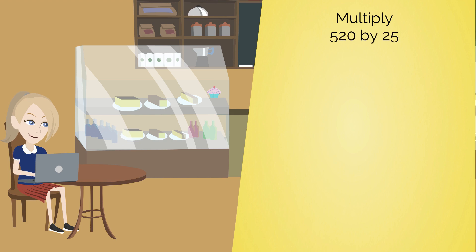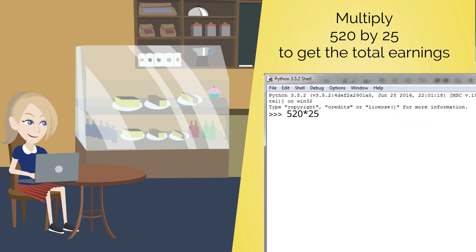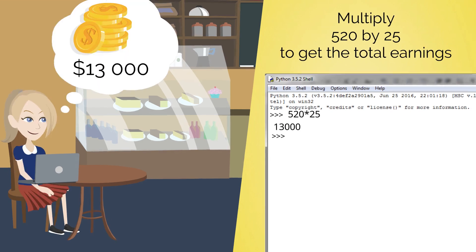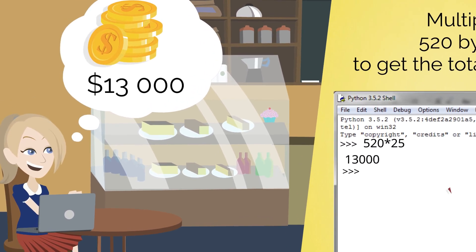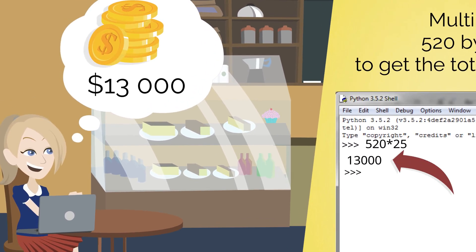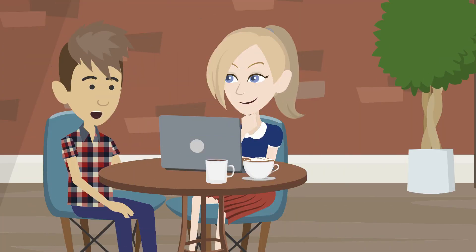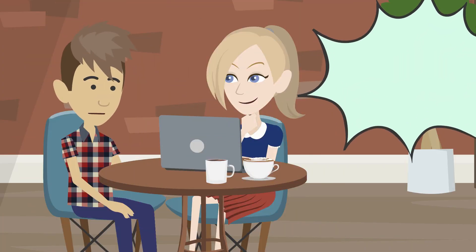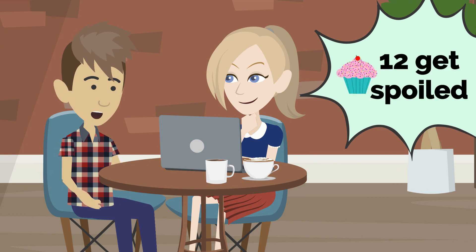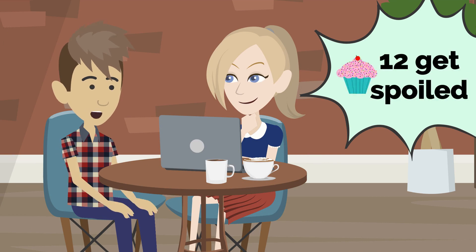That means I have to multiply 520 by 25 to get the total earnings. Then press return key. I would earn a total of $13,000. Great. Now from among the total cupcakes, make 12 of them get spoiled before being sold. How much would you have earned then?